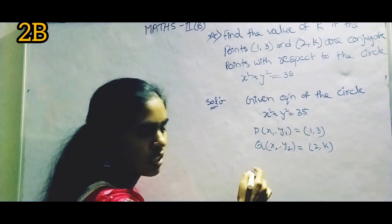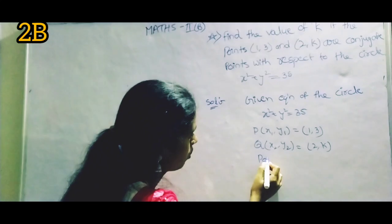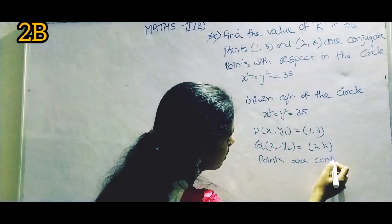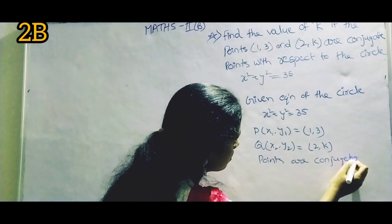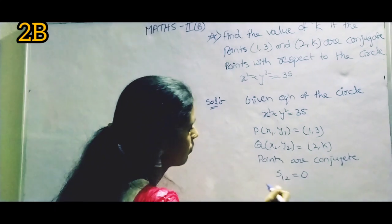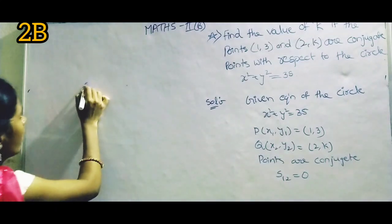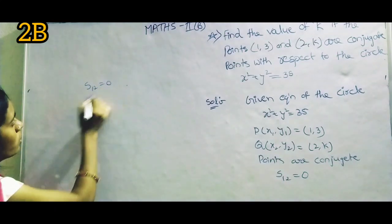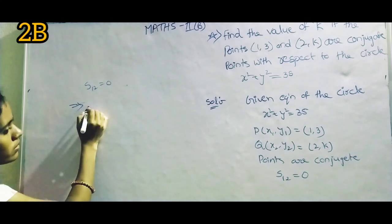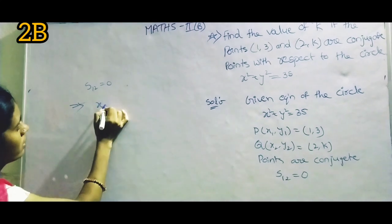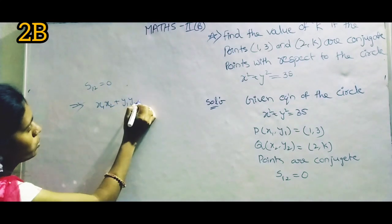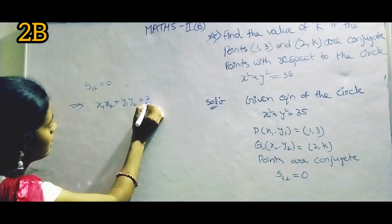Points are conjugate, so S₁₂ = 0. That implies x₁x₂ + y₁y₂ = 35.